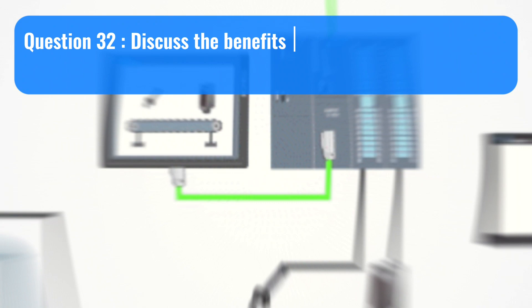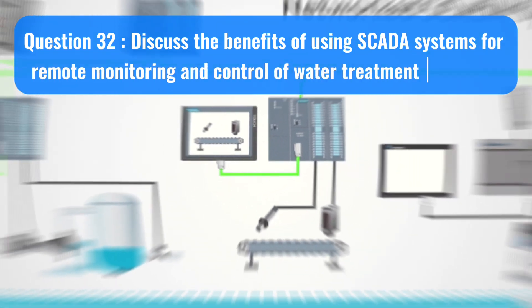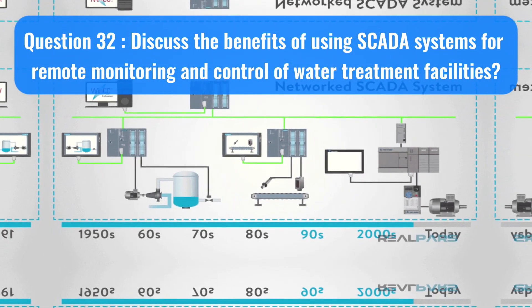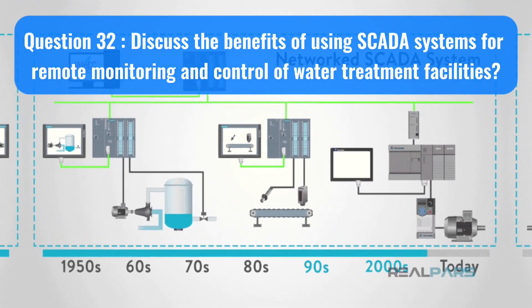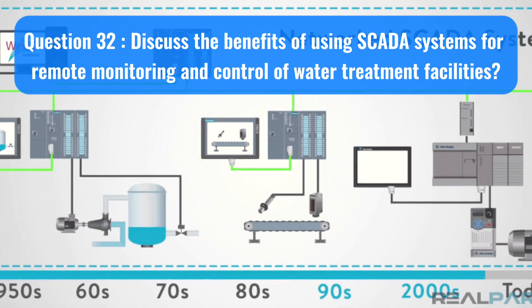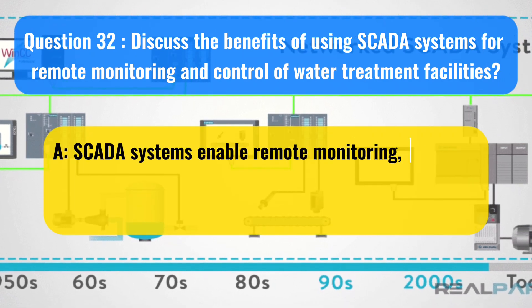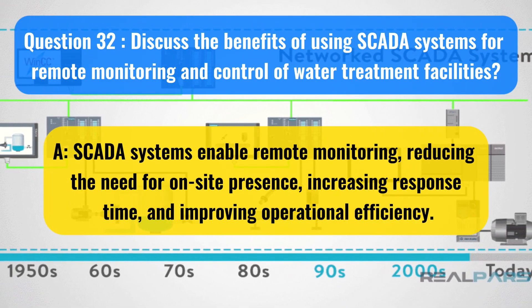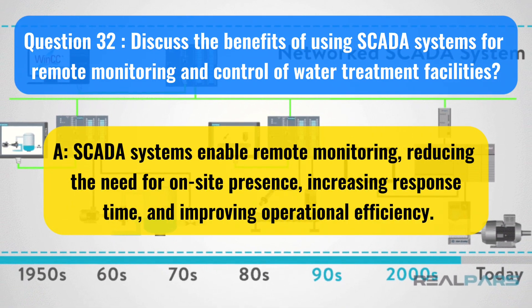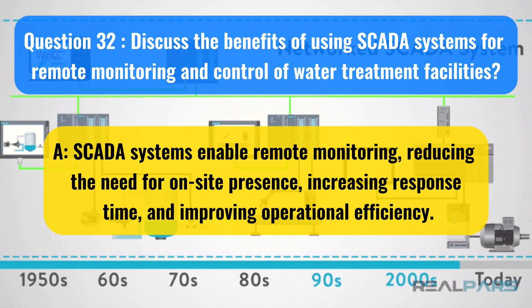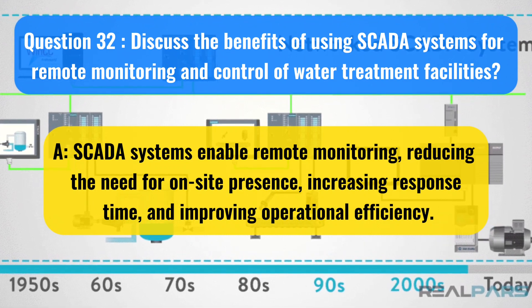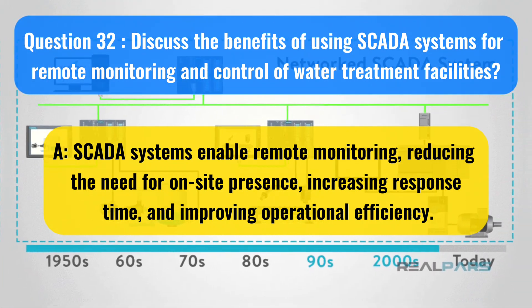Question 32: Discuss the benefits of using SCADA systems for remote monitoring and control of water treatment facilities. SCADA systems enable remote monitoring, reducing the need for on-site presence, increasing response time, and improving operational efficiency.